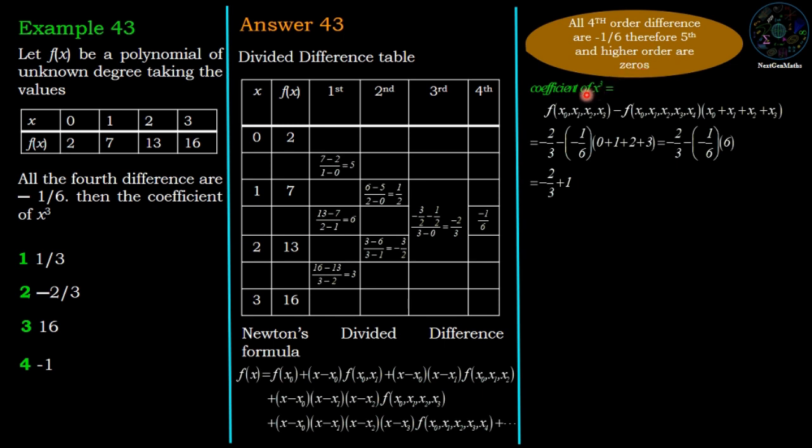Therefore the coefficient of x³ for the given data is f(x₀, x₁, x₂, x₃), that means third order difference, minus f(x₀, x₁, x₂, x₃, x₄), that means fourth order difference, times (x₀ plus x₁ plus x₂ plus x₃). So by simplifying Newton's divided difference we can easily find the coefficient of x³.